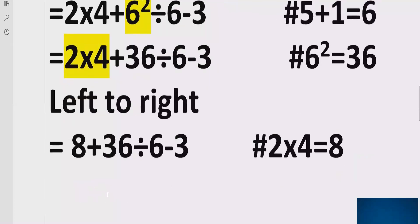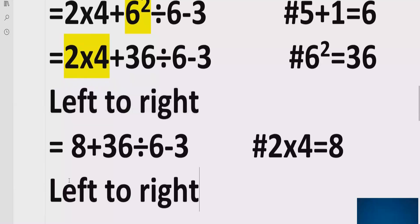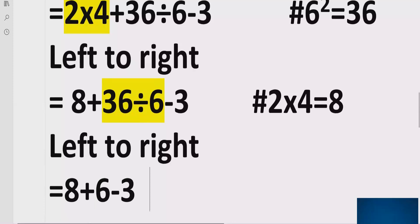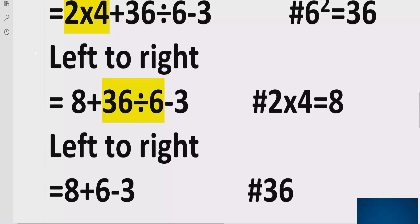Again we solve division and multiplication. Now we have 36 divided by 6 — dividing gives us 6. So the expression becomes: 8 plus 6, minus 3. Reference: 36 divided by 6 equals 6.